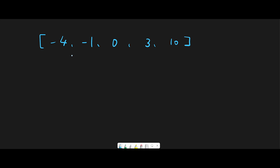This is a very simple question. All we have to do is just multiply the same number twice. So in this case, minus 4 multiply minus 4 is 16, and minus 1 multiply minus 1 is 1. So this is 0, this is 9, and this is 100. And after that, all we have to do is just sort these numbers so that we can get the return value.